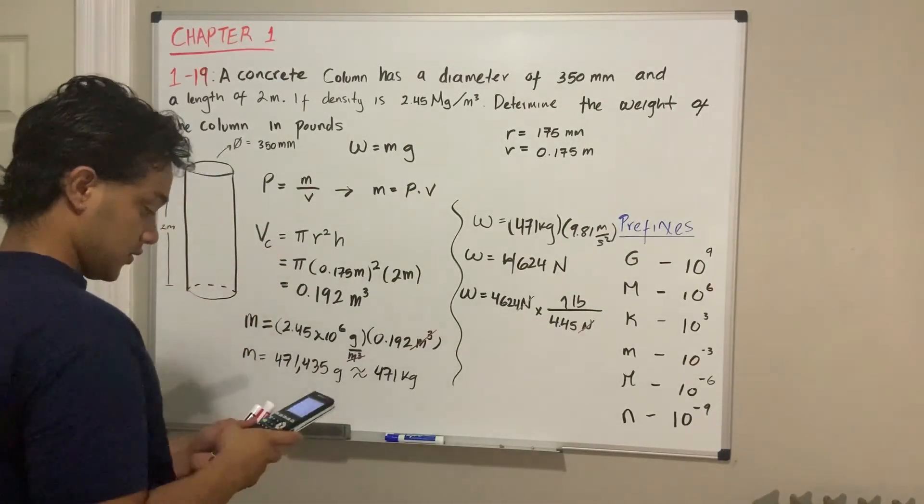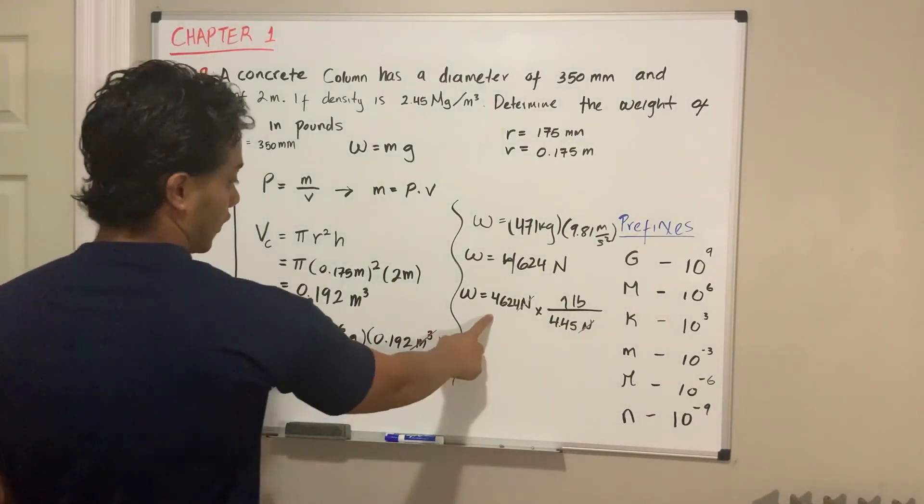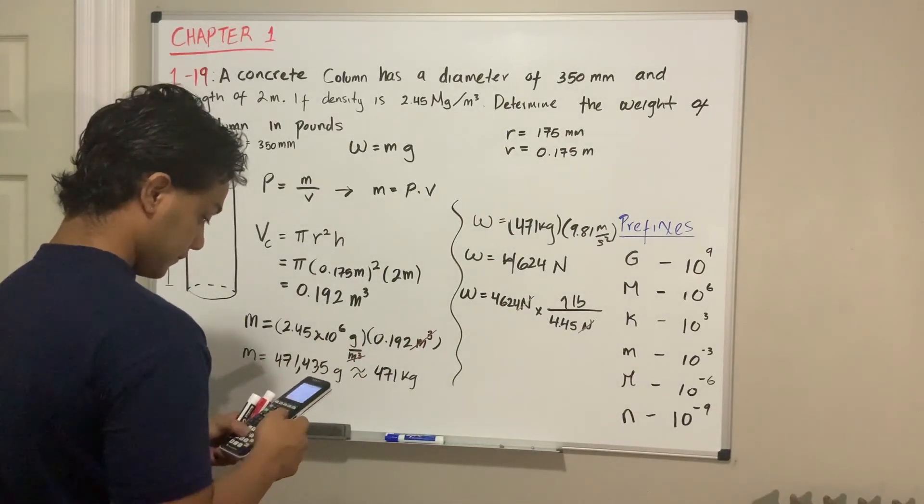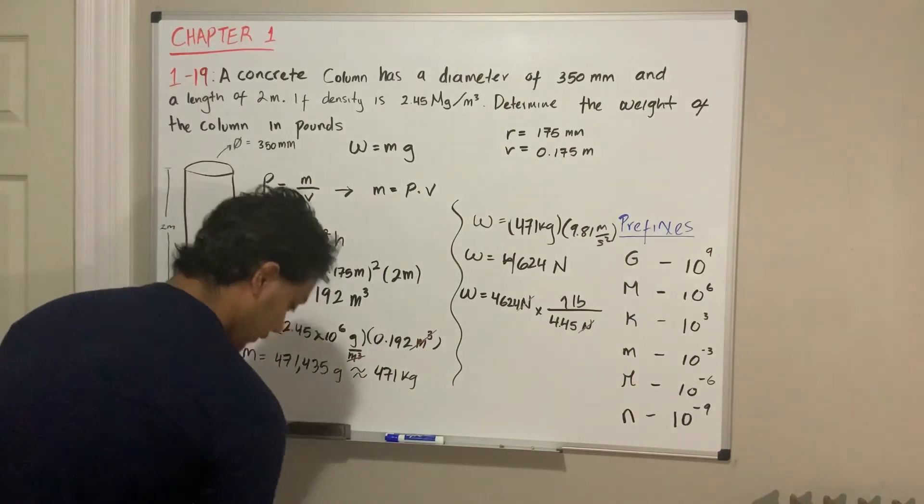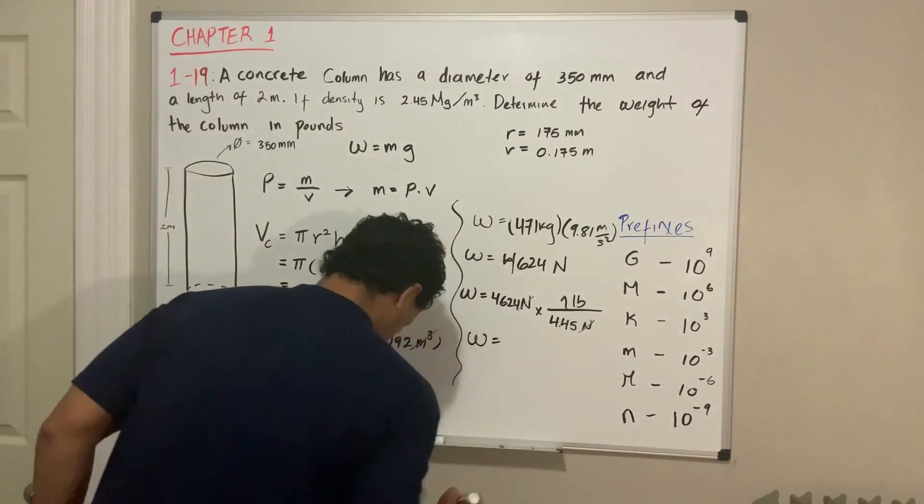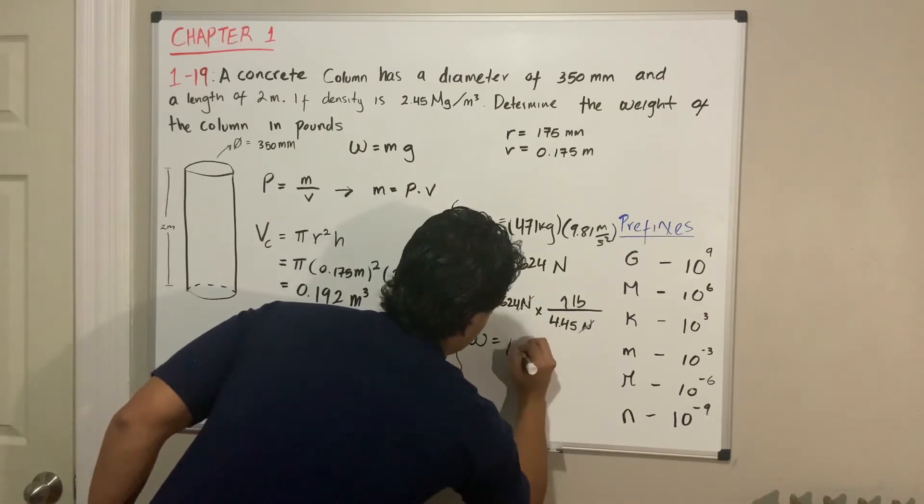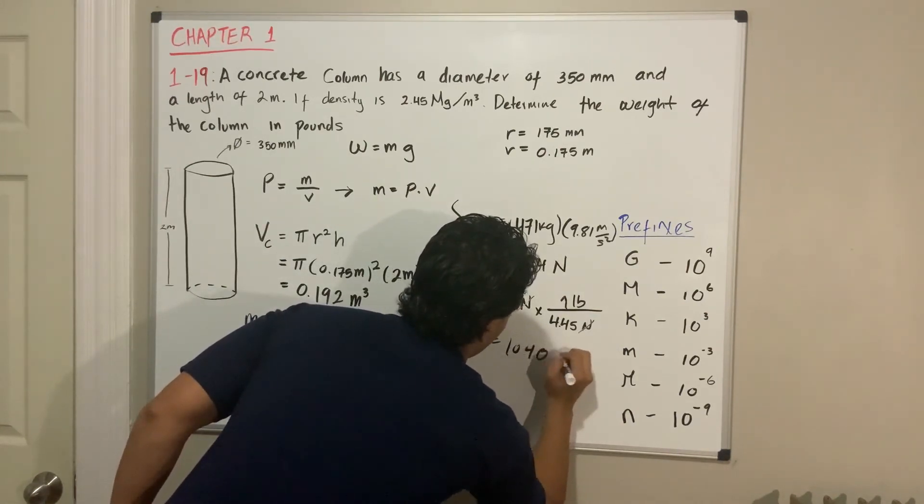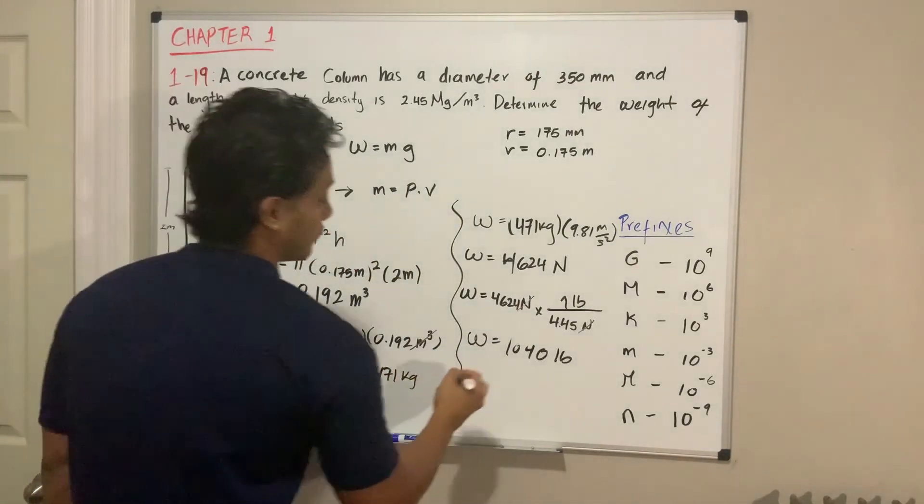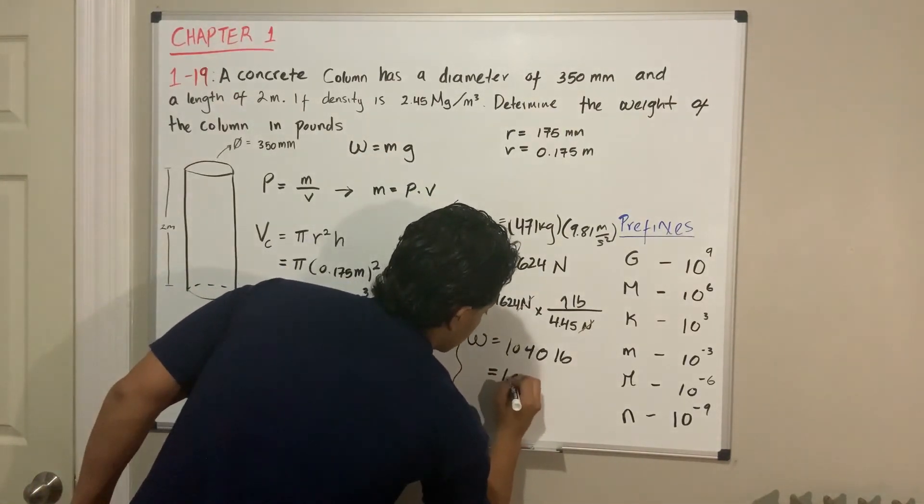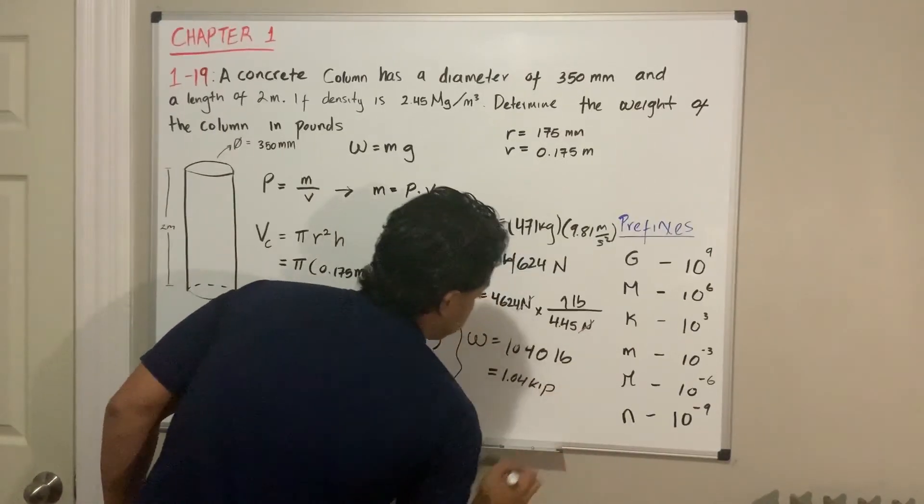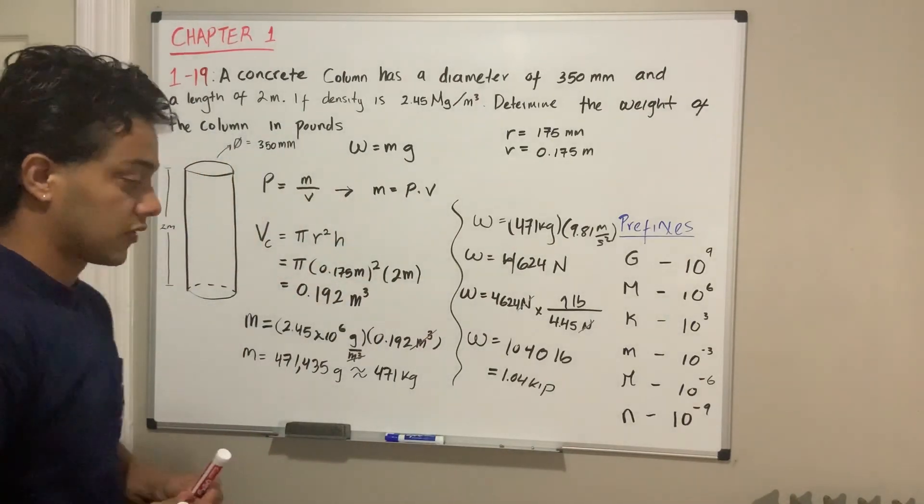So we need to divide 4624 by 4.45, and we get that the weight in pounds is actually 1040 pounds. You may see in your book that the answer is 1.04 kilo-pounds.